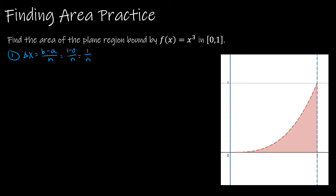Step two is to find the endpoint. You can use left or right, but the right is always easier. That's a plus i times delta x. In this case, a is 0, i is always i, and delta x is 1 over n, so simplifying, I get i over n.